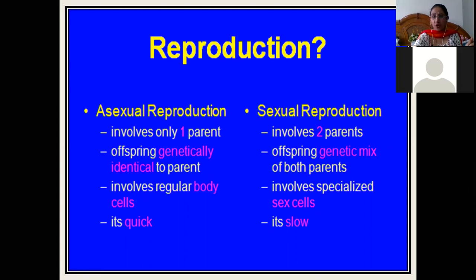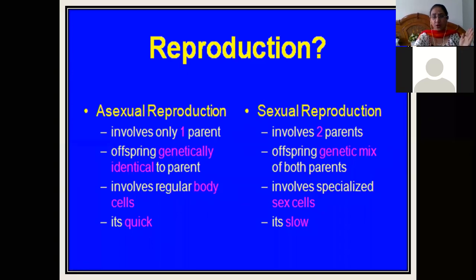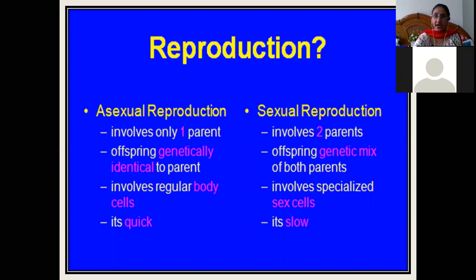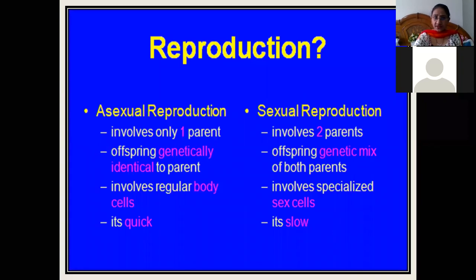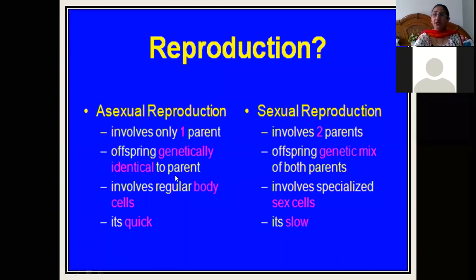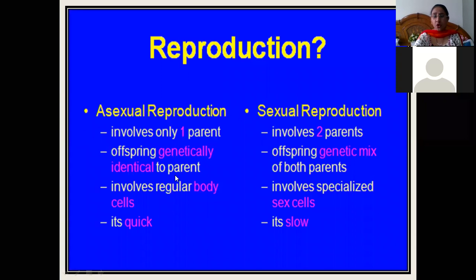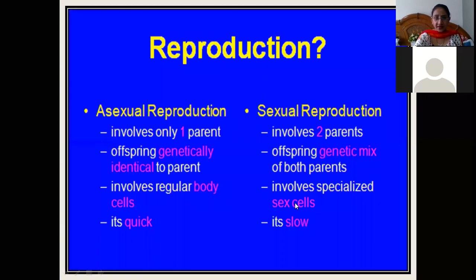Only one plant is involved in asexual reproduction. The progenies produced through asexual reproduction are mainly similar to that of the parents. They are mostly similar to the parents, and the offspring are genetically identical to the parent. The offspring or progeny being produced are similar to that of the parent.